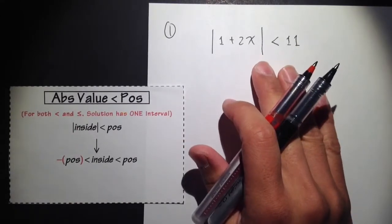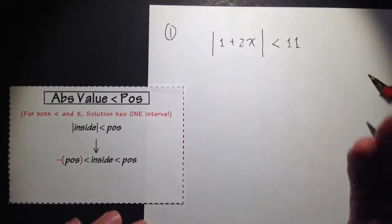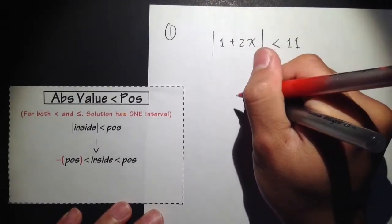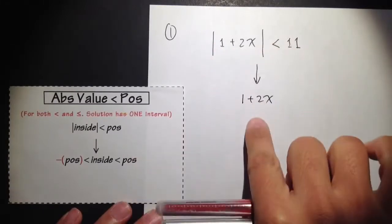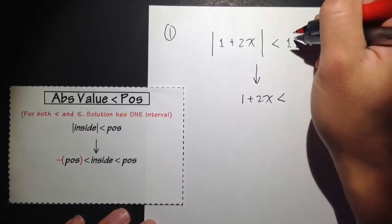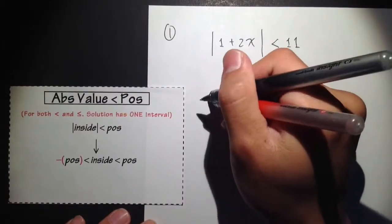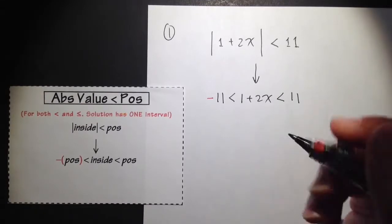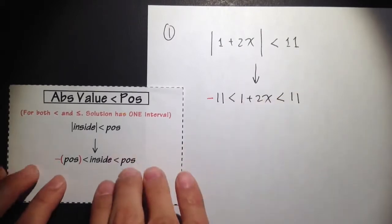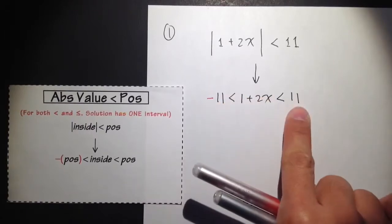We have the absolute value isolated on the left hand side already. We are going to break down this inequality by taking out the absolute value. We are going to do so by putting the inside — which is 1 plus 2x — in between of positive 11. We are also going to make the 11 negative, so we have negative 11 on the left hand side. Always keep the smaller number on the left hand side and the bigger number on the right hand side.